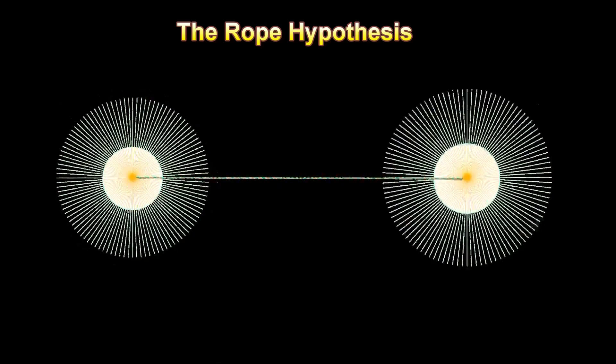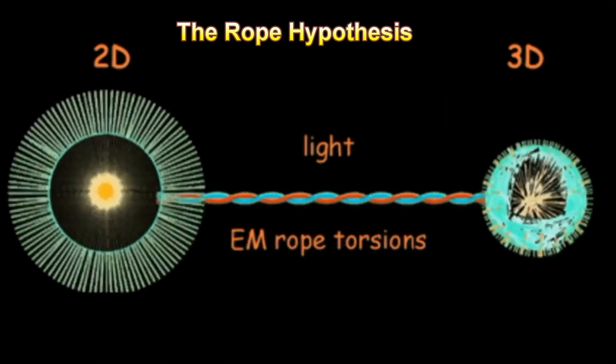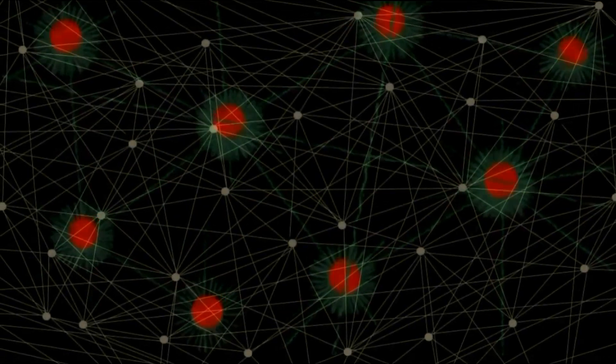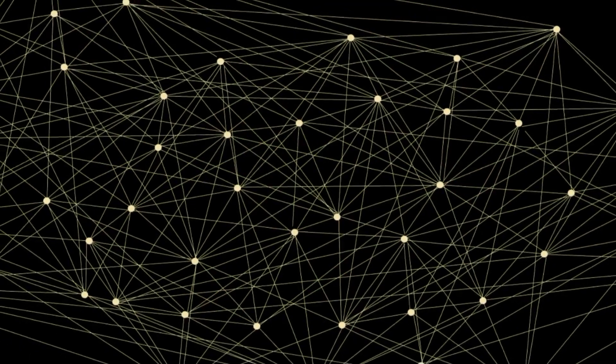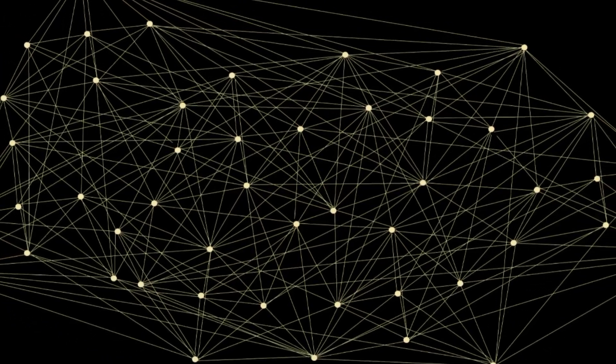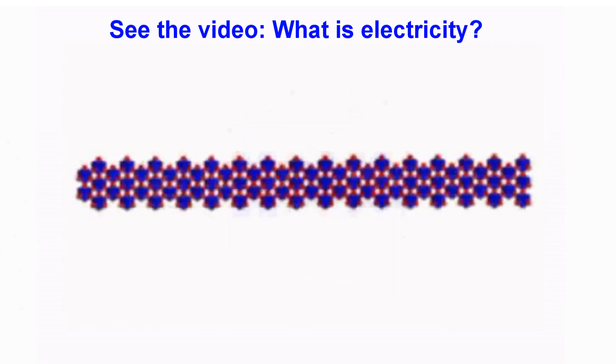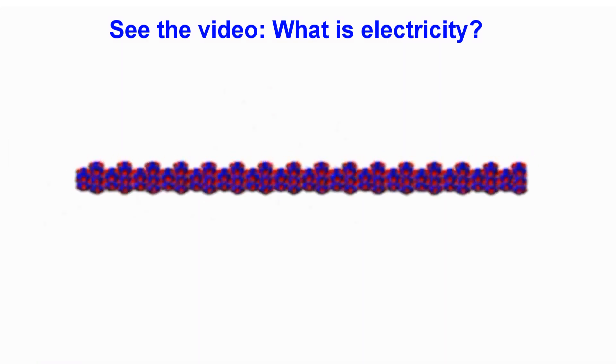The rope hypothesis proposes that any two atoms are bound by an entity that resembles a rope, a twined pair of threads. All atoms in existence are physically connected. Under this model, electricity consists of a string of atoms that have merged to form a serpentine. This serpentine spins in place.